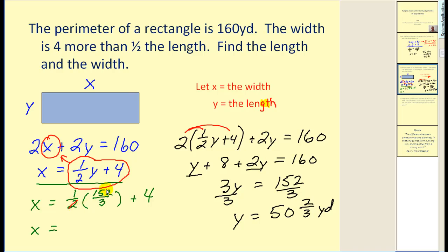Simplifying here, this changes to a 1, this changes to 76. So we'd have 76-thirds plus 4. Well, 4 is the same as 12-thirds. So we'd have 88-thirds, which is equal to 29 and one-third yards. Let's go ahead and write this one more time to clean it up. We know the width now, which is x, equal to 29 and one-third yards. And the length, or y, is equal to 50 and two-thirds yards.